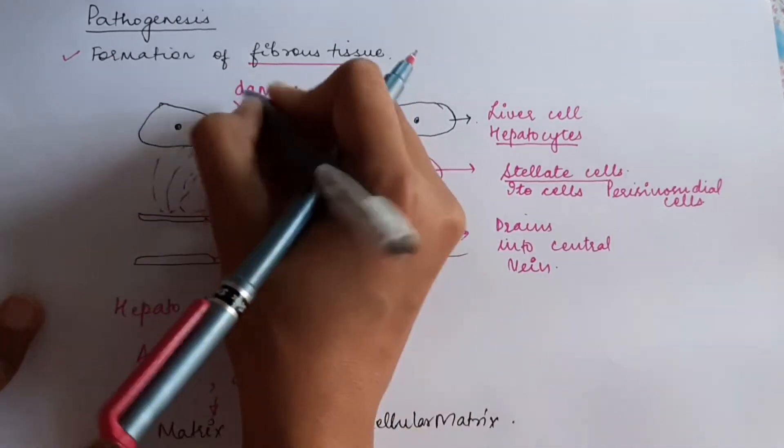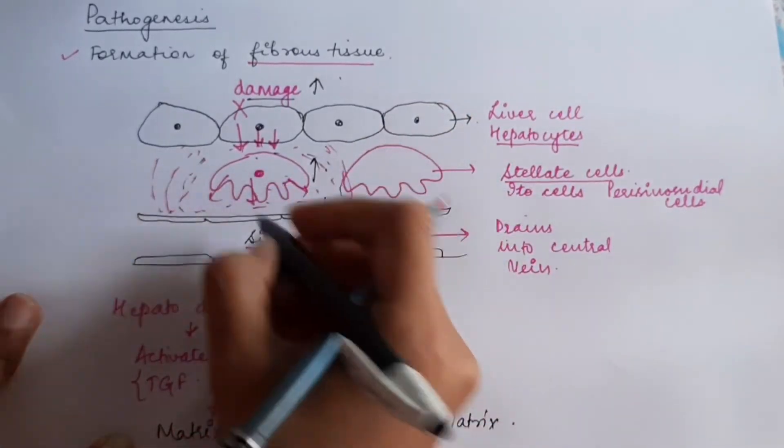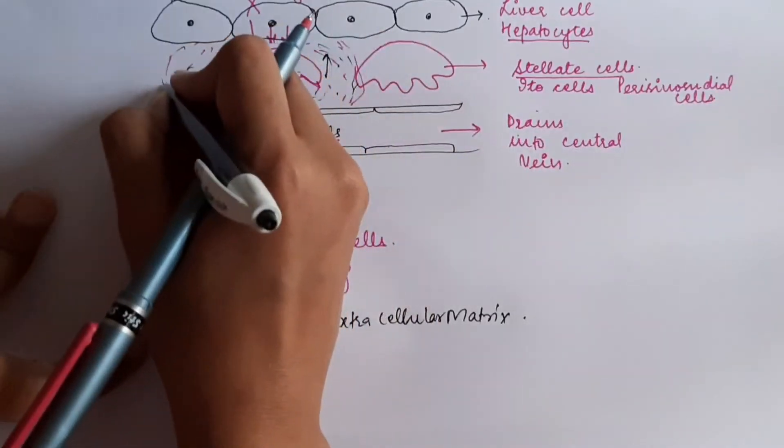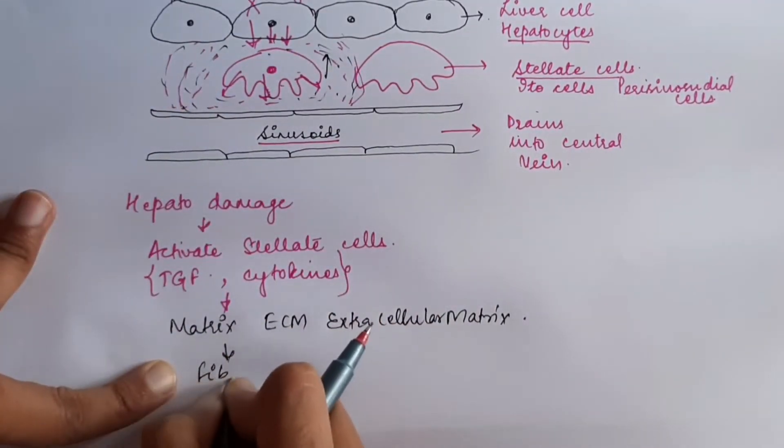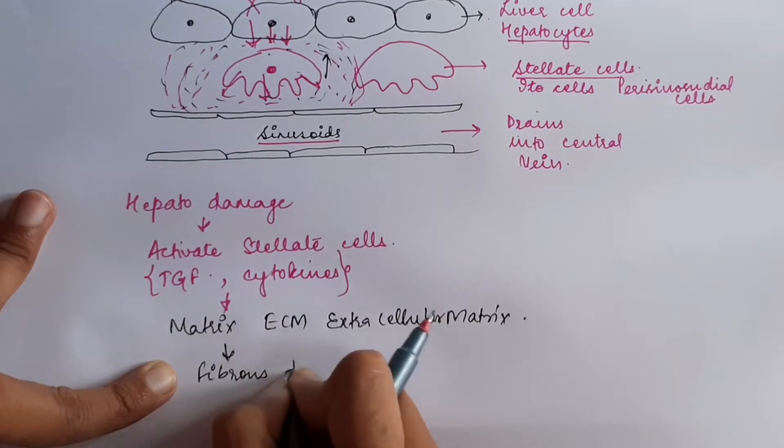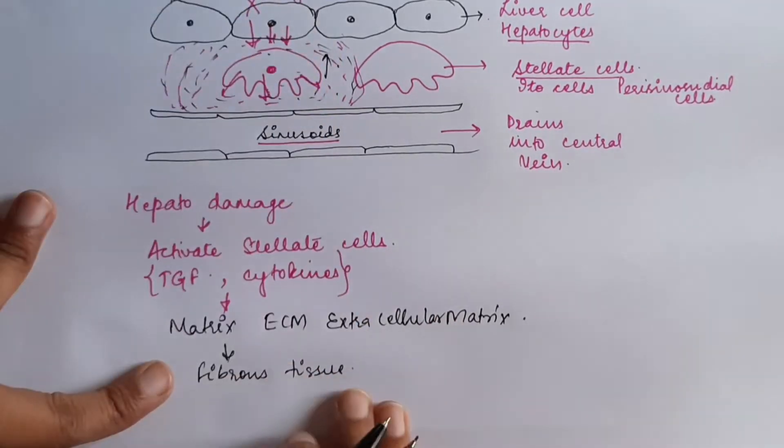Now, as the damage is increasing, activation will increase, and the matrix will grow further. Gradually, this matrix will form fibrous tissue there. So, that is the pathogenesis of formation of fibrous tissue.